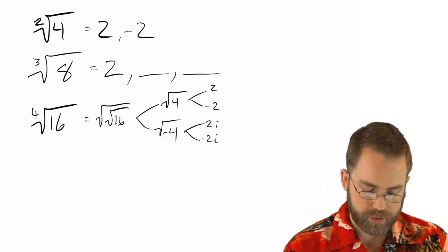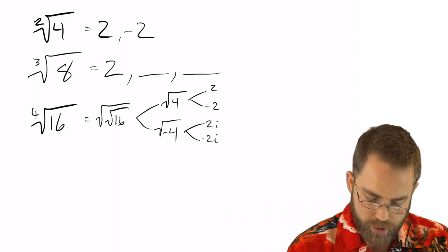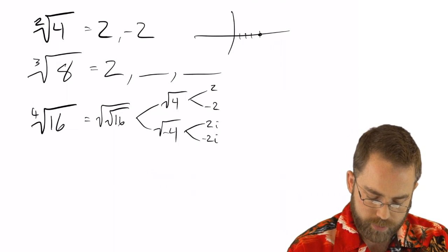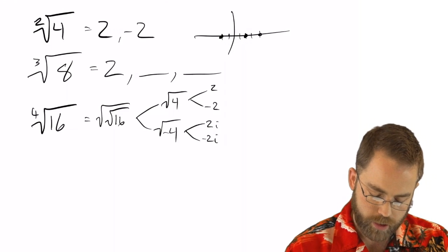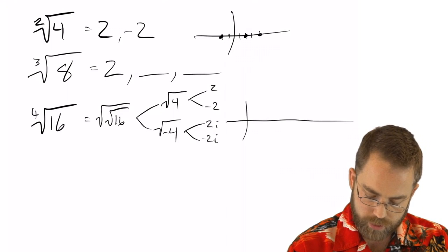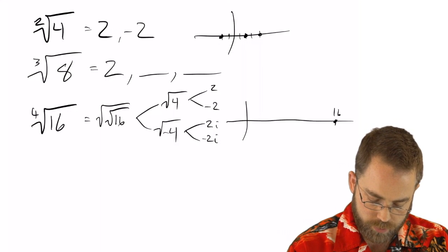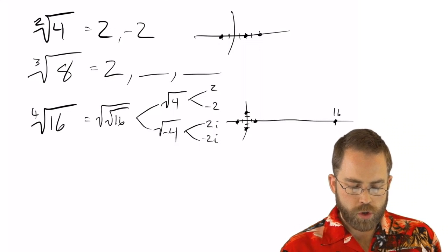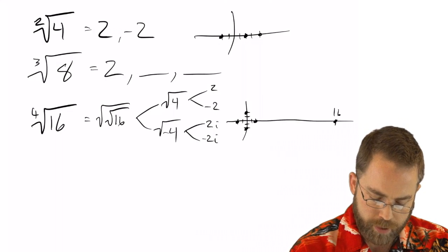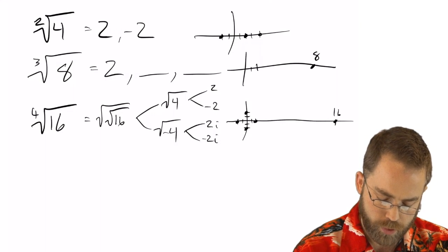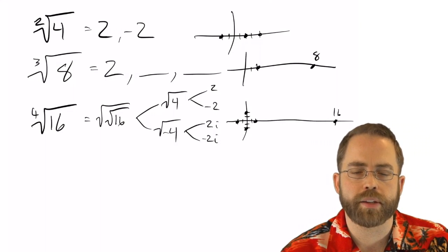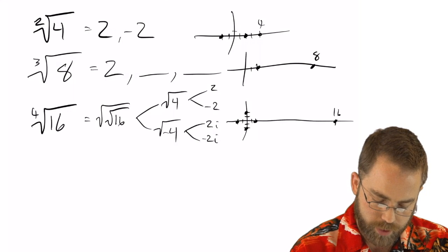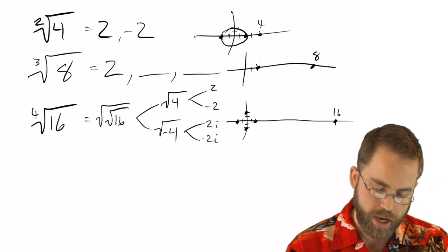So this got De Moivre thinking. He said, shouldn't there be three solutions to a cube root problem? Shouldn't there be more than just 2 times 2 times 2 is 8? Yeah, but shouldn't there be two more? There are. So the way he thought about that was he said, okay, so what is the square rooting of 4 look like in polar complex? Well, if I'm out there at 4 and then I plot the solutions, the solutions are there and there.